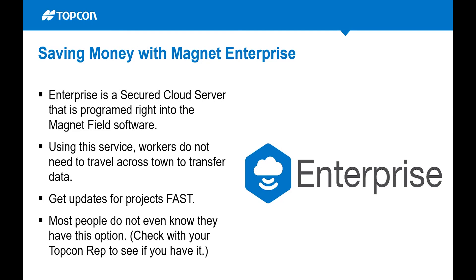The biggest thing to note: if you're running the 12-month lease package with our Magnet Field and layout software, you already get Enterprise — you have one seat included. A lot of people don't realize that. If you want to know more, definitely reach out to your Topcon rep; we'll be glad to let you know if you have it. Let me show you just how easy Magnet Enterprise can start saving you money.